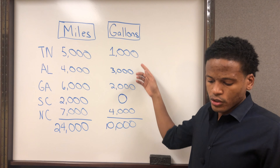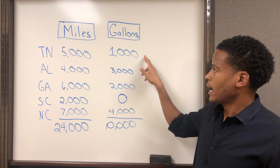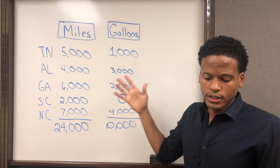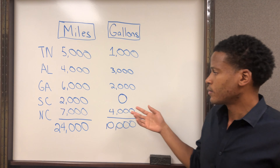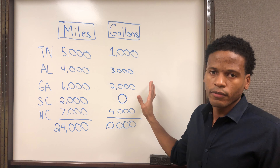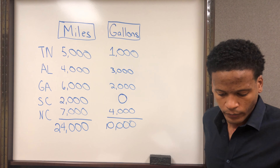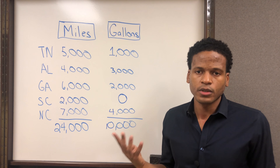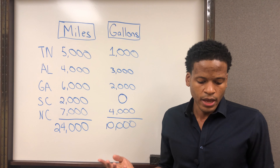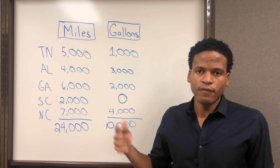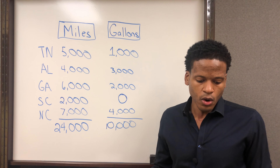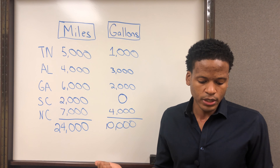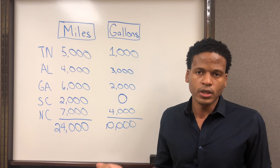Are the gallons the gallons used? No, this is the gallons purchased, not the gallons used. Do I list a state if there's no fuel purchased? Yes — all that means is that you drove through that state and never filled up. What are the deadlines? It's quarterly, so four tax returns per year, due at the end of the following month after the quarter: Q1 is due end of April, Q2 end of July, Q3 end of October, and Q4 end of January.